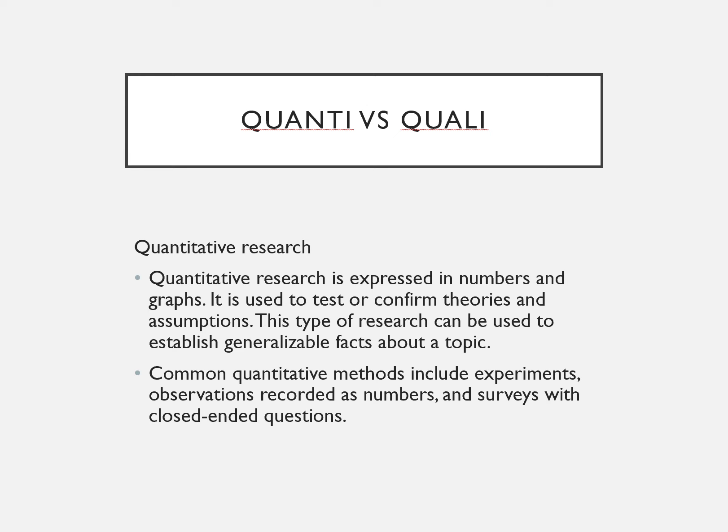Quantitative normally involves experiments, observations recorded as numbers, and surveys with closed-ended questions. For example, if you want to distribute a questionnaire to all architecture students in UPM, Faculty of Design and Architecture — say about 200 students from part one and part two — then distributing a questionnaire to them is definitely a quantitative study.